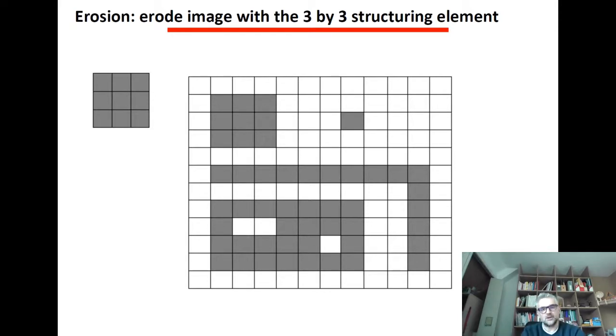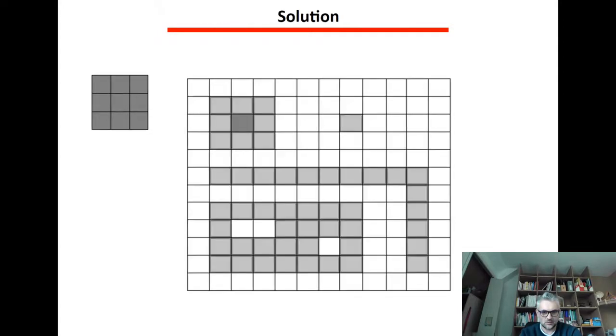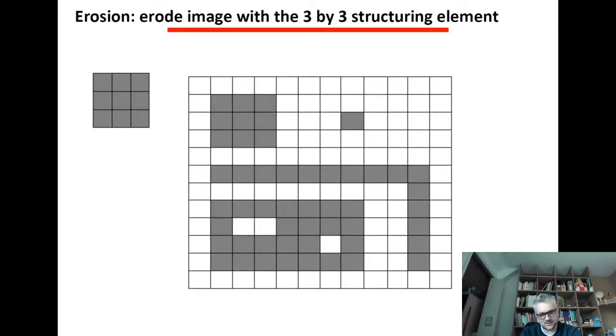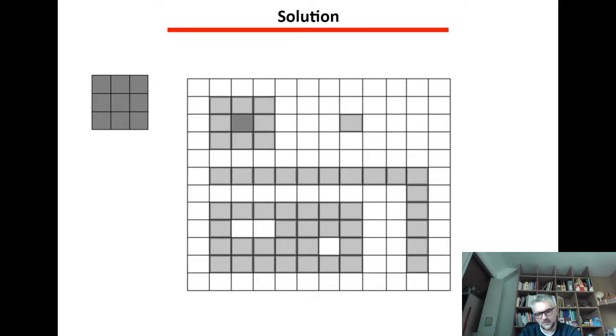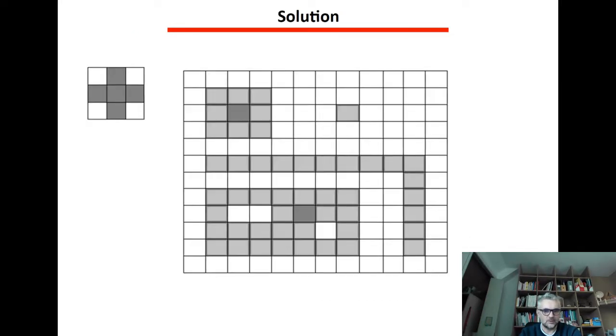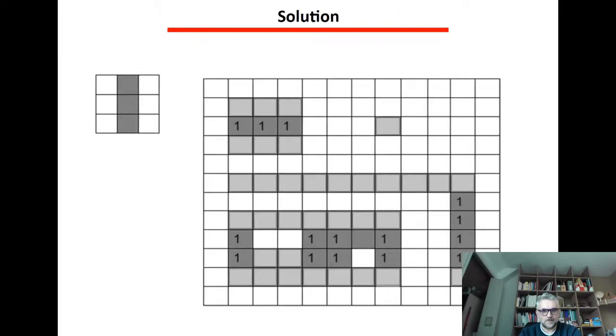And erosion is the same but if the content of the structuring element and what it sees in the image is exactly the same, only if the intersection is exactly the full content of the structuring element then it keeps the original value. So in this case you will come to this. As you have seen earlier it was adding one layer of pixel and in this case it's withdrawing one layer of pixel. In ImageJ of course you can pick up different types of structuring elements and it will give you different results.